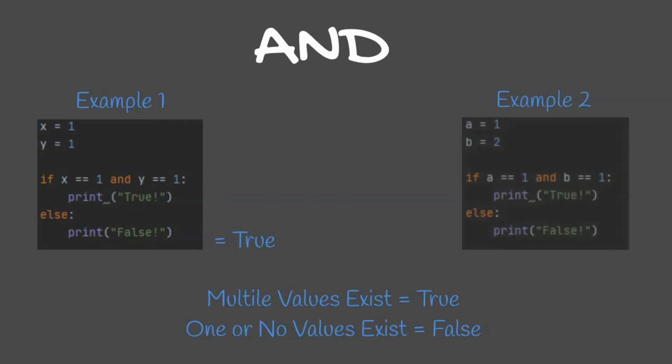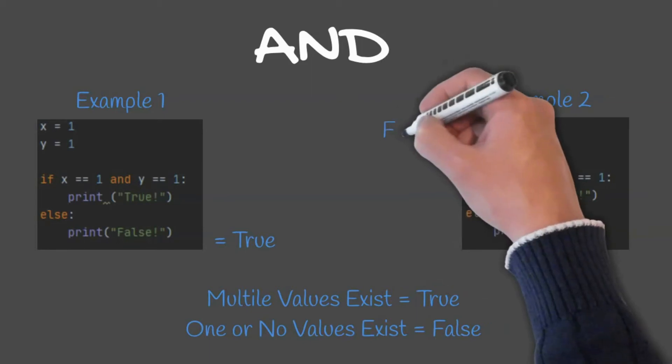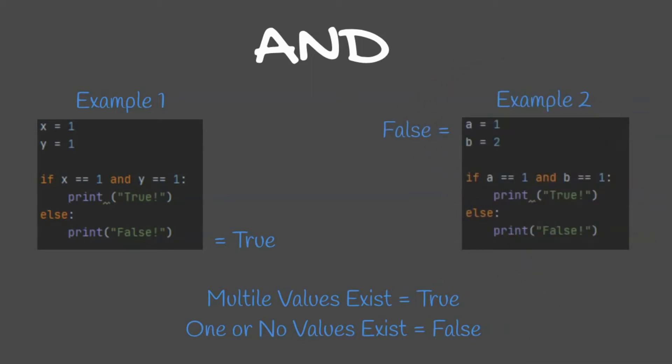If A equals 1 AND B equals 1, this would print true, or else it would print false. In this example, false would be printed.